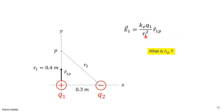Using the formal approach, the electric field due to charge 1 at point P is ke times q1 with its sign, over r1 squared — the distance between charge q1 and point P — times a unit vector pointing from charge 1 to point P. That unit vector points along the positive y direction, so it is simply j-hat.